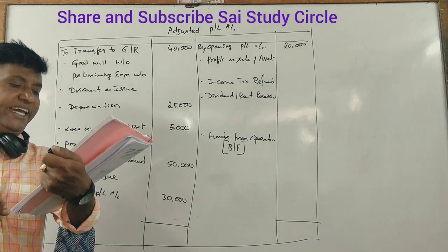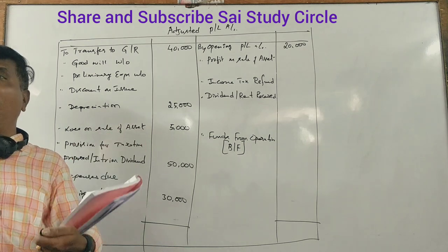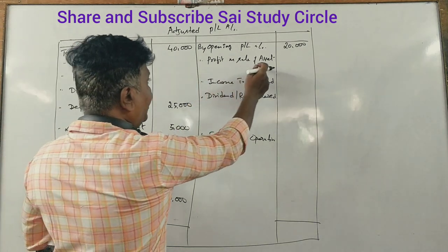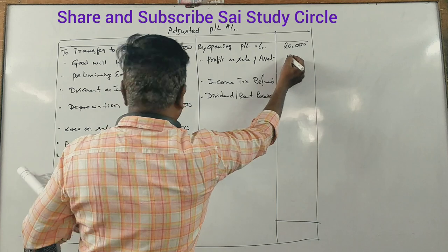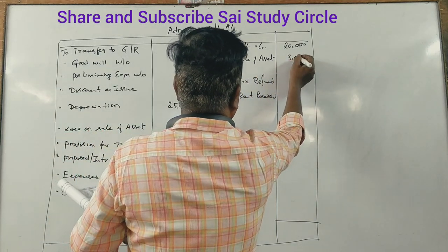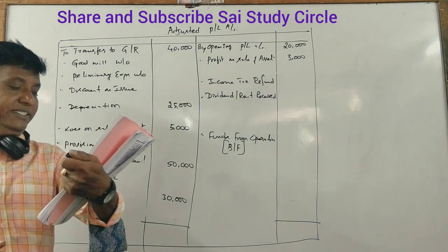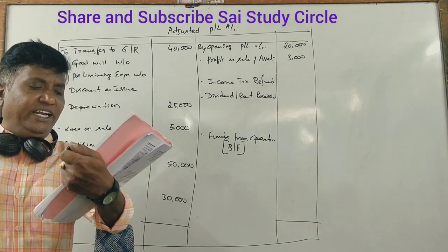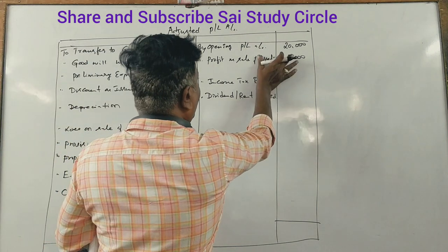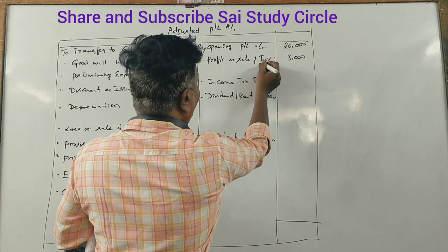Sale of investment results in a profit of 3,000 rupees — profit on sale of investment is 3,000 rupees. Next, sale of furniture results in a profit of 3,000 rupees.